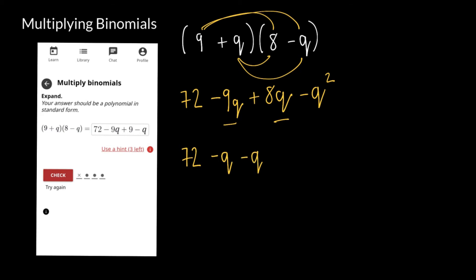Or I can start with the number or the expression with the biggest degree, which would be negative q squared in this case, and then negative q, and then 72, which is our constant. So I can also write it as negative q squared minus q plus 72. And that's what the answer should look like.